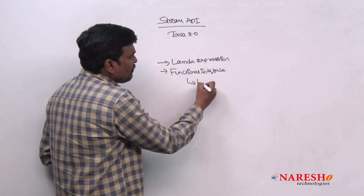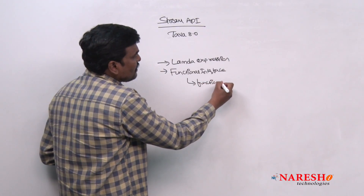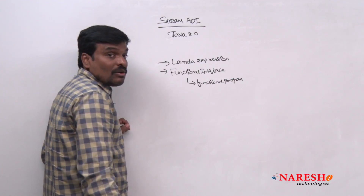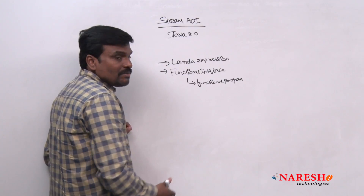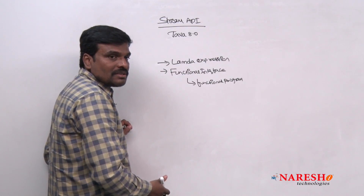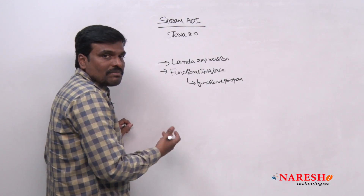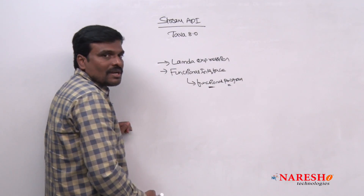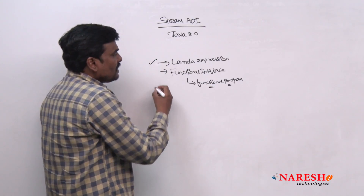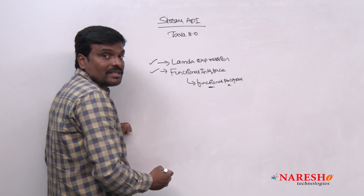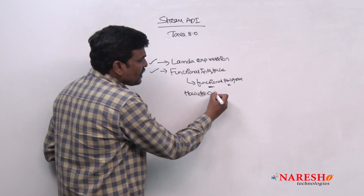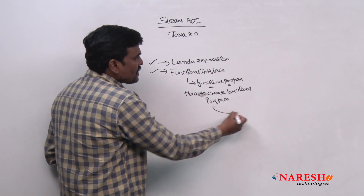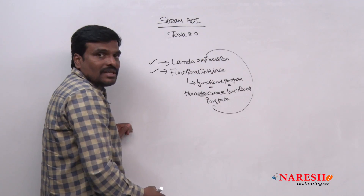This is an approach of functional programming. It means you are trying to write a function as an object, which can be moved from one method to another method. That is what we have seen — lambda expression and functional interface. We have seen how to create a functional interface and how it can be represented as a lambda expression.